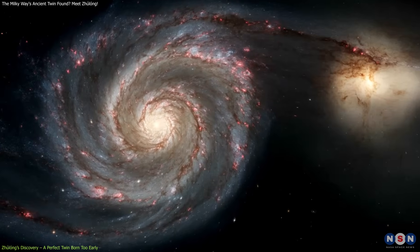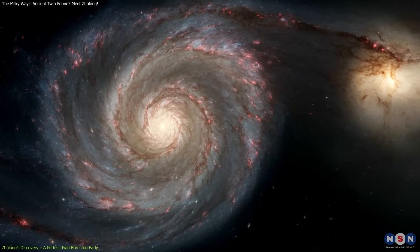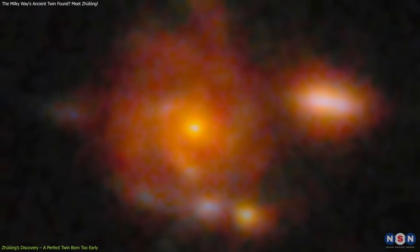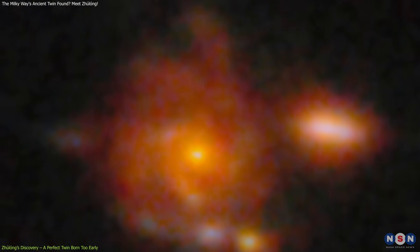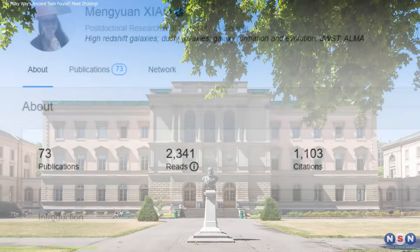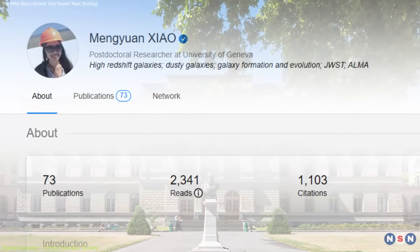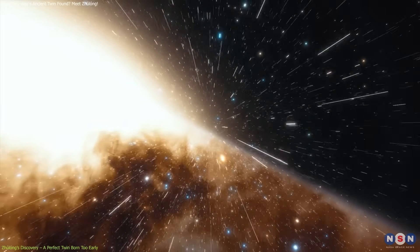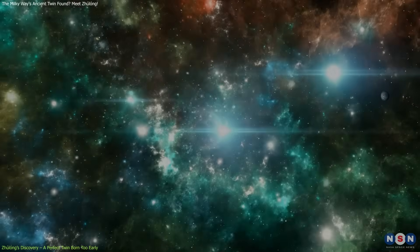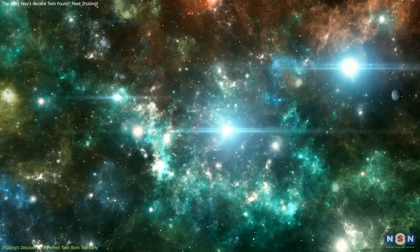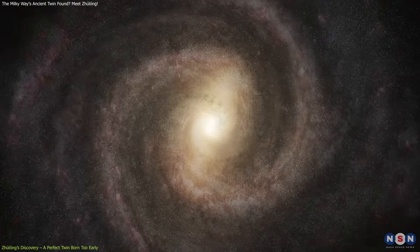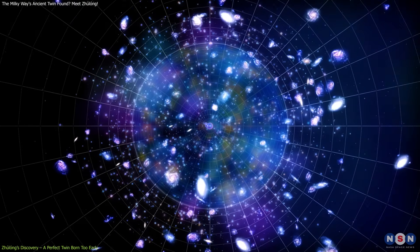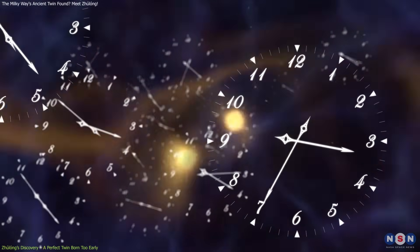The galaxy's structure immediately caught astronomers' attention. It displayed clear, well-formed spiral arms radiating from a prominent central bulge, a sight that shouldn't exist in such a young universe. According to Dr. Mengyuan Xiao of the University of Geneva, who led the study, Zhulong's disk spans over 60,000 light-years, comparable to the Milky Way, and contains more than 100 billion solar masses in stars. These are not minor features. They are signatures of maturity, features that standard cosmological models suggest should have taken billions of years to develop.